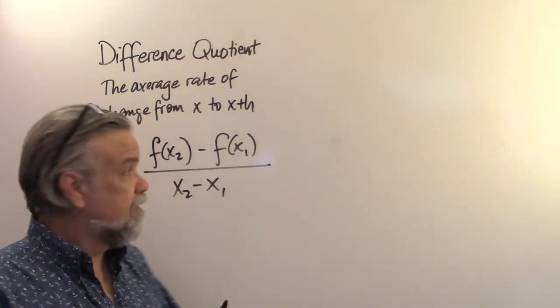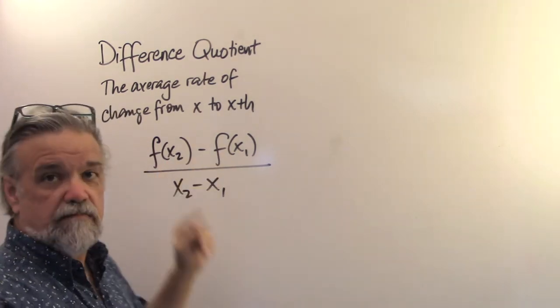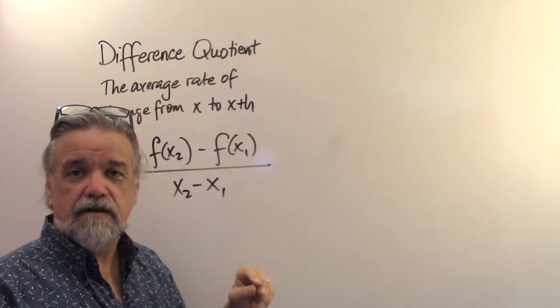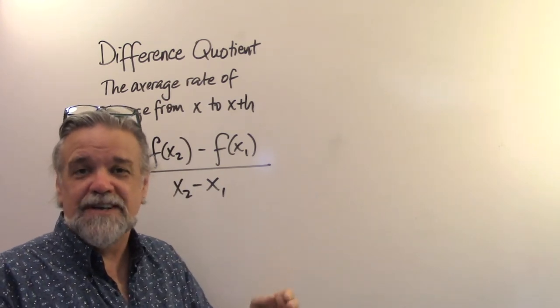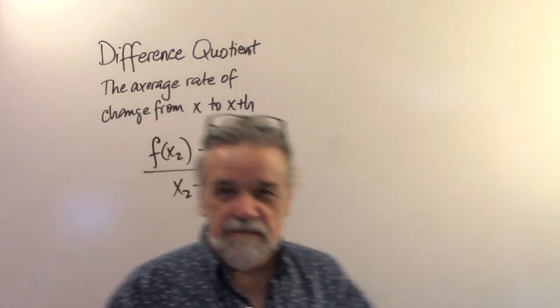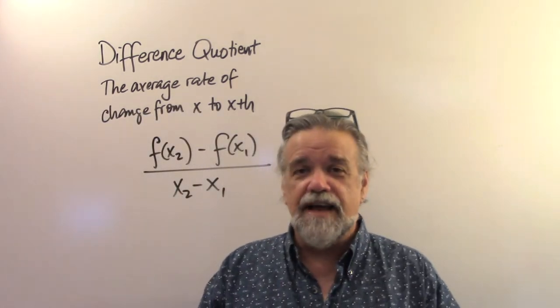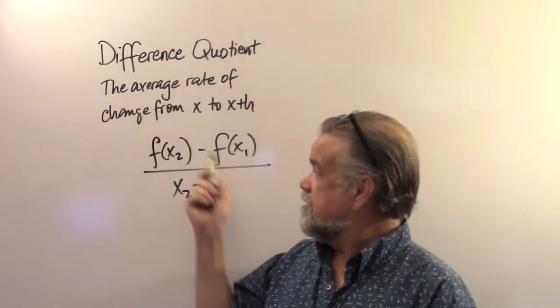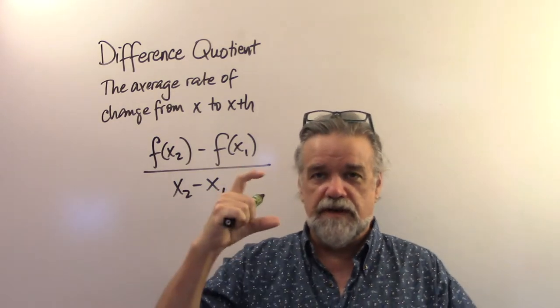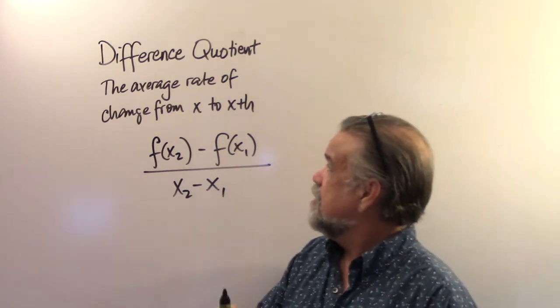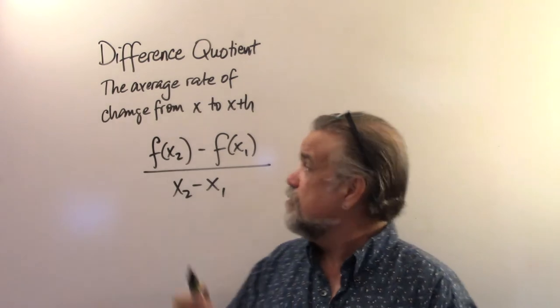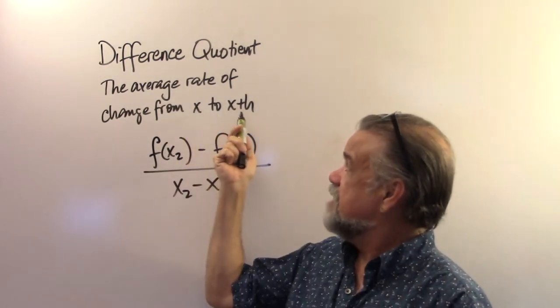That's for any x1 and x2. And so, we say the average rate of change is this on the interval from x1 to x2. So, now what we're looking at is the interval from x to x plus h.